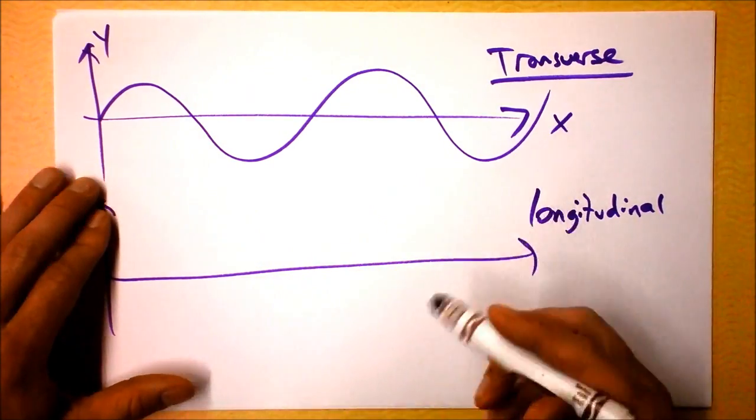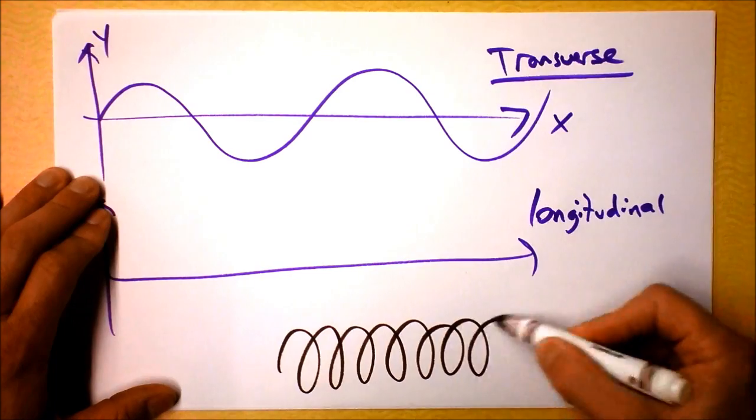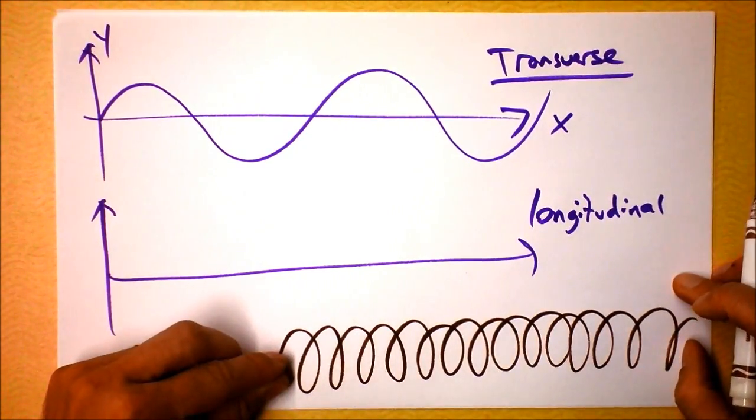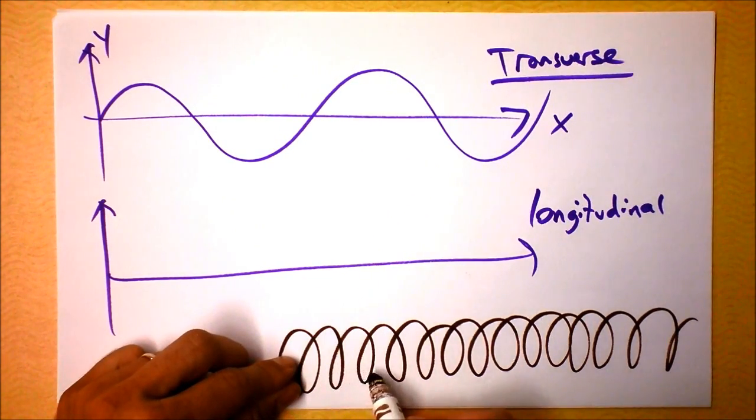You could also get a longitudinal wave if you had a slinky. Let me draw you a slinky. This is a quick sketch of a slinky. If you take a slinky and you push it forward and back really rapidly, go forward and back, so then this wave pulse will travel through the slinky like this.